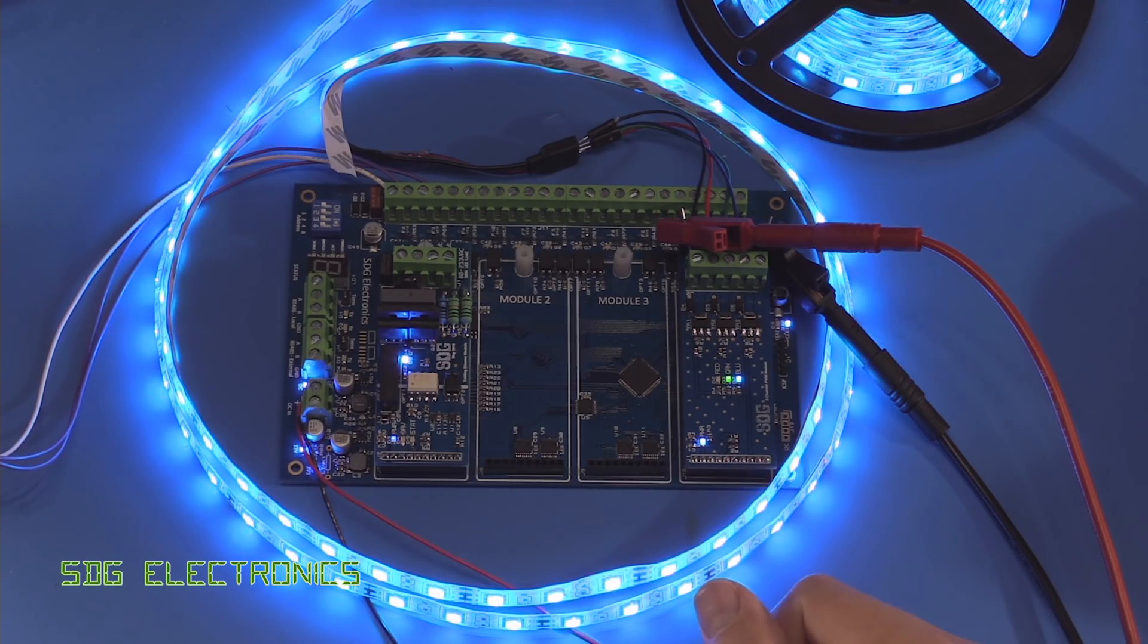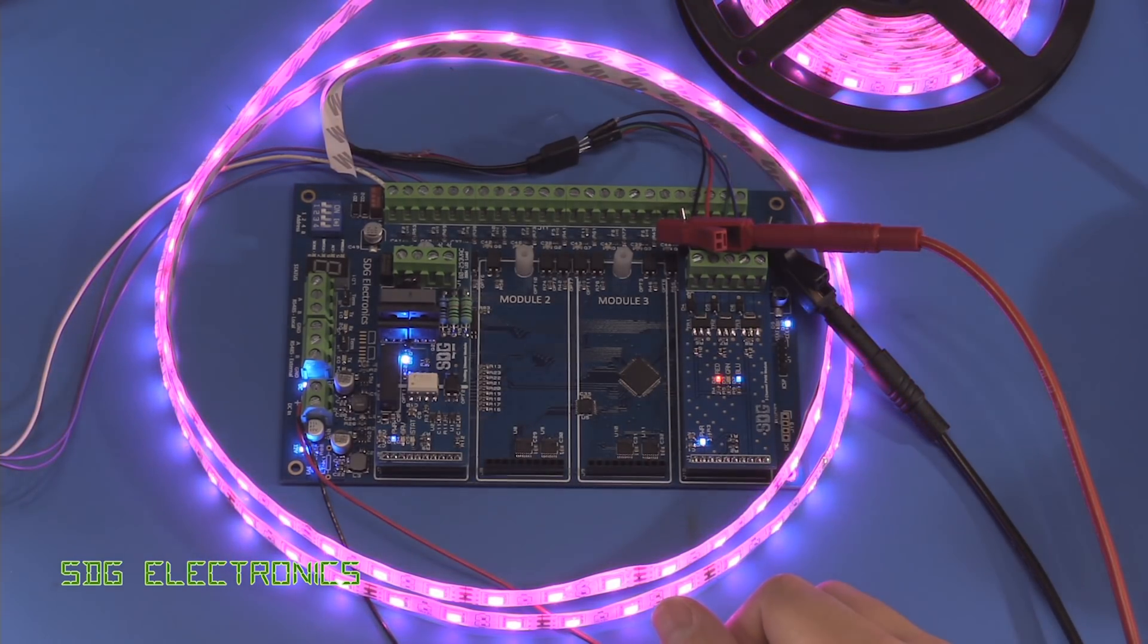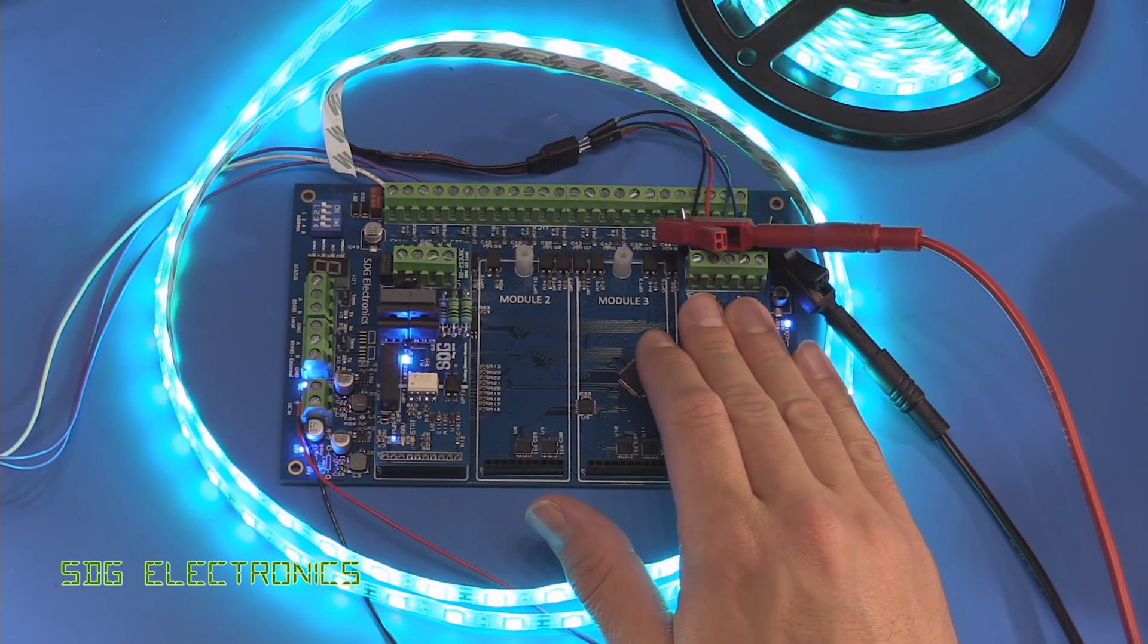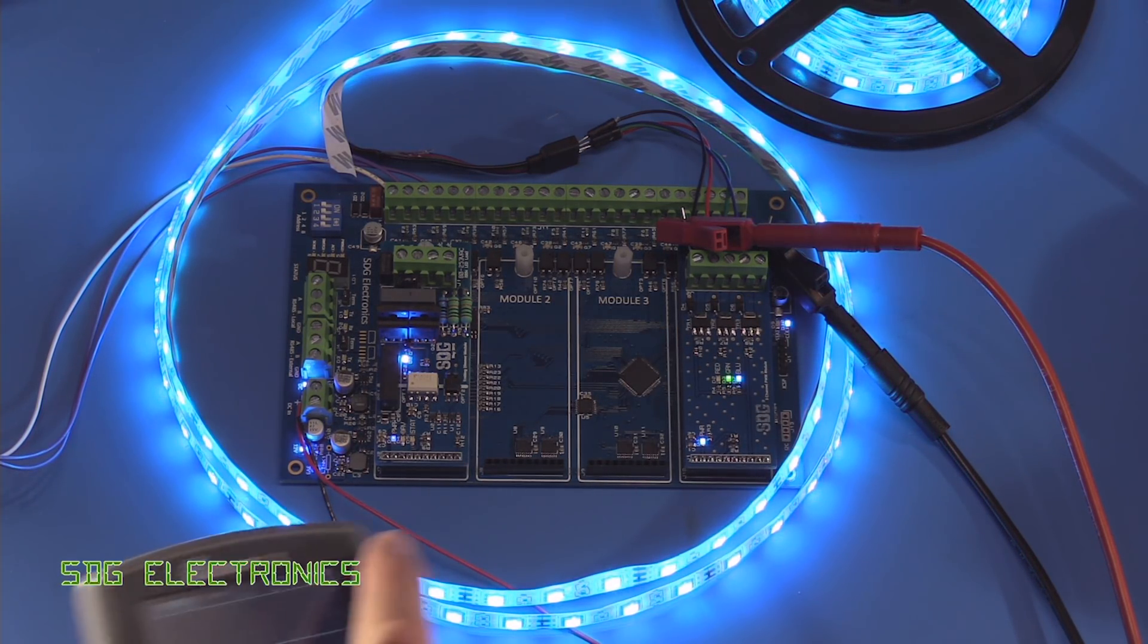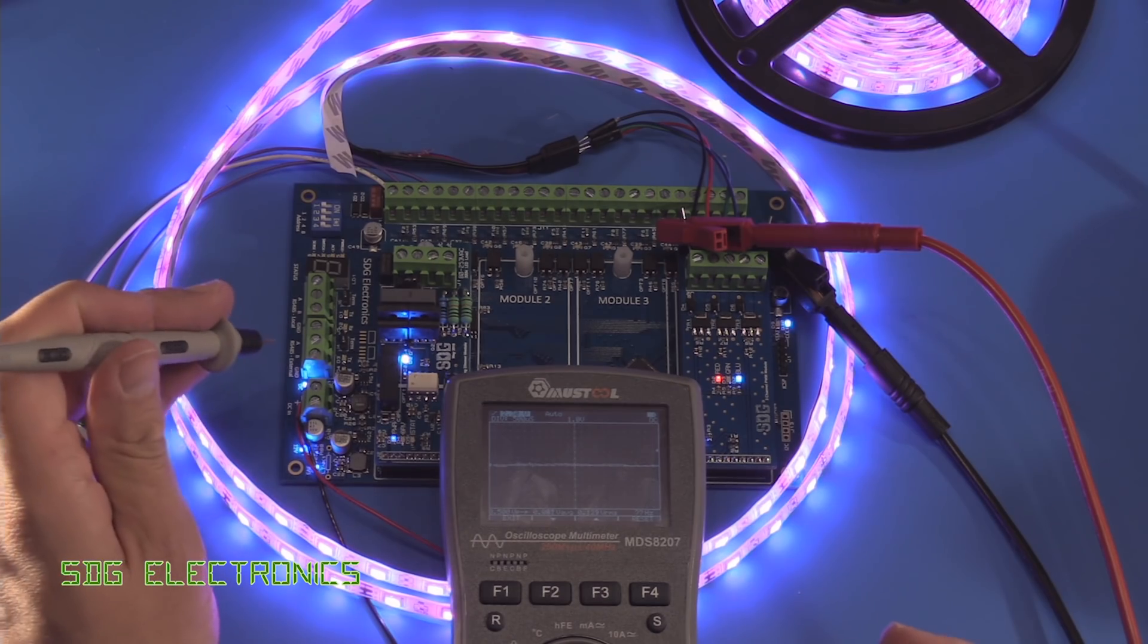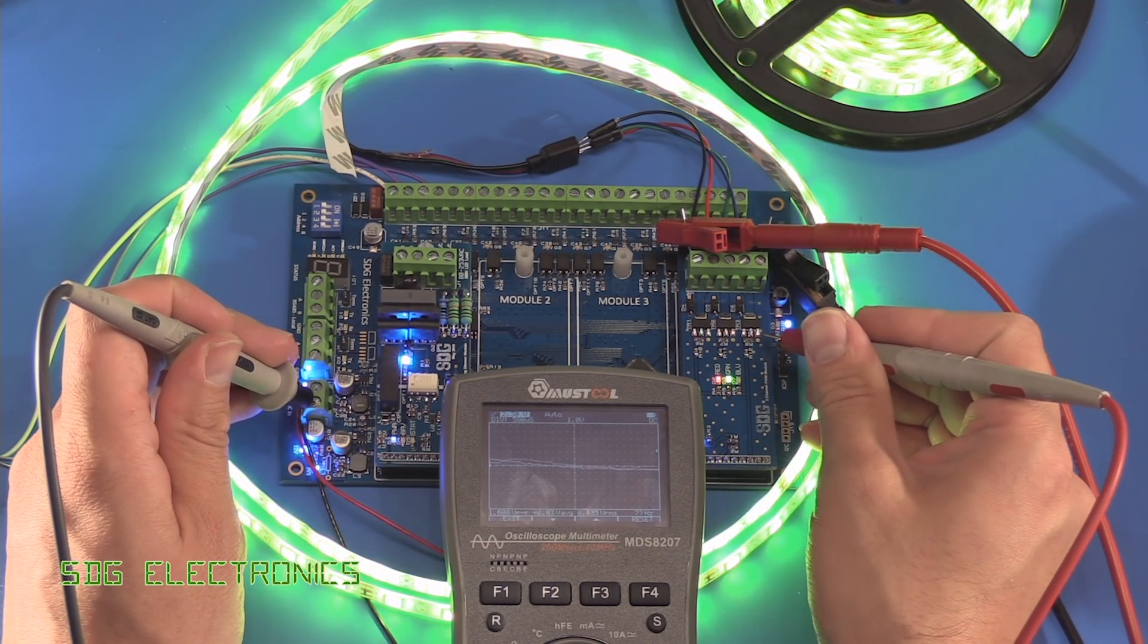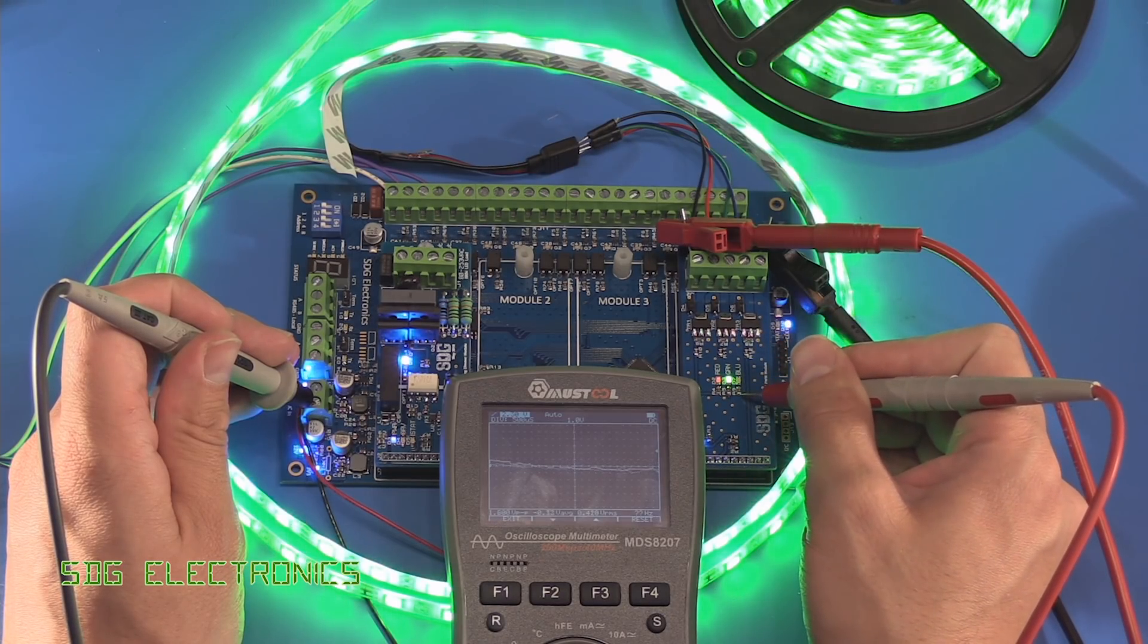Yeah that seems to be working absolutely fine. It's drawing about one amp from the power supply so these MOSFETs aren't dissipating too much power and they're not getting hot in any way. Let's just double check the PWM waveform.